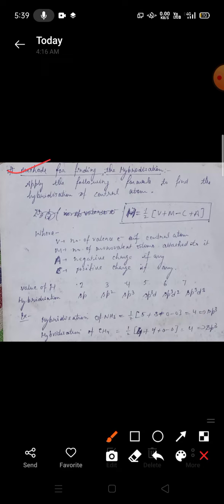We can apply the formula H = 1/2(V + M - C + A). Here V stands for the number of valence electrons of central atom. M stands for number of monovalent atoms attached to it. A stands for negative charge if any, that is in case of anion, and C stands for the positive charge if any, in case of cation.